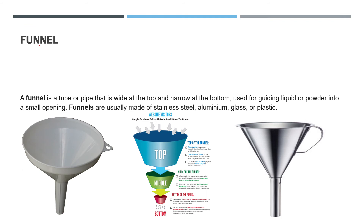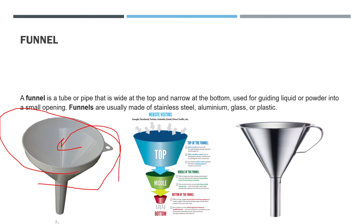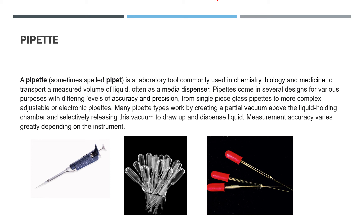Funnel: it has a big opening — you pour a liquid into it and it comes through the narrow end. The use of it is to direct liquid into a container without spilling. For example, if you pour milk into it and place a bowl underneath, it flows right through. It is usually made from stainless steel, aluminium, glass, or plastic.